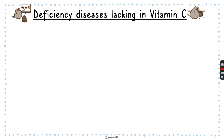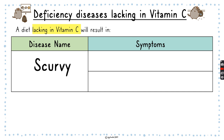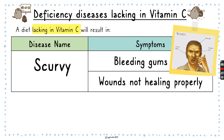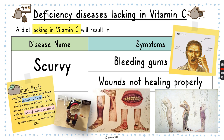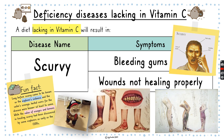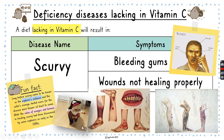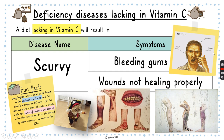Let's look into the deficiency diseases. A diet lacking in vitamin C will result in the disease called scurvy. The symptoms are bleeding gums and wounds not healing properly. A fun fact is that scurvy is known as the explorer's sickness — what they found out was that oranges and lemons can treat scurvy, because sailors and pirates had to go to sea for long periods of time without much fruit, so a lot of sailors got scurvy.